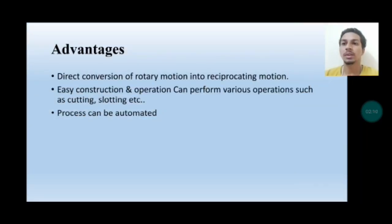The advantages of Scotch Yoke Mechanism are: direct conversion of rotary motion into reciprocating motion, easy construction and operation, ability to perform various operations such as cutting and slotting, and the process can be automated using mechanical and electrical devices.